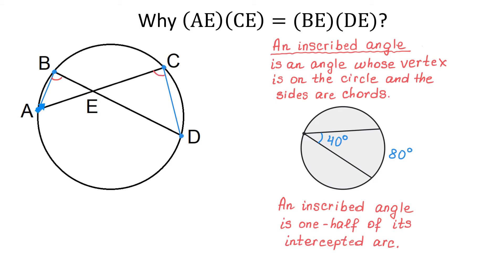Next, we will take a look at angle A and angle D. These two are also equal because angle BAC intercepts the arc BC, and angle CDB also intercepts the arc BC. So again, they are inscribed angles and they intercept the same arc. Then we can say that angle A in the first triangle is equal to angle D in the second triangle. Now, let's take a look at angle BEA in the first triangle and angle CED in the second triangle. These two angles are equal because they are vertical angles. And now we have two triangles that have equal angles, and these triangles are similar.